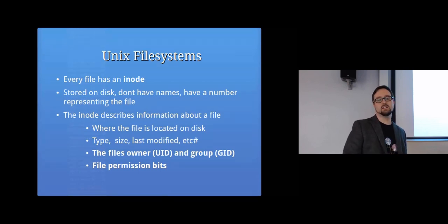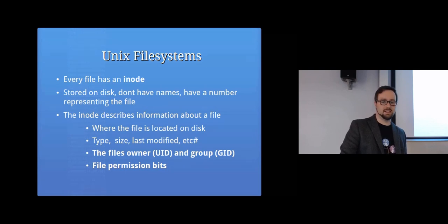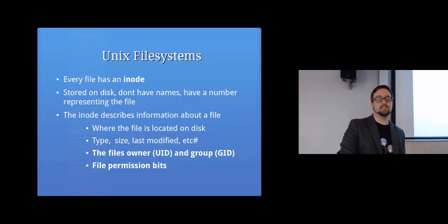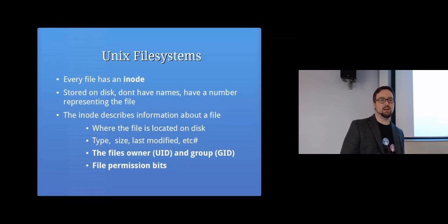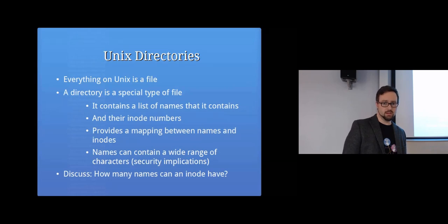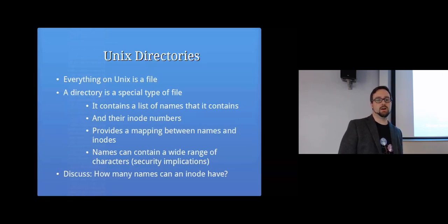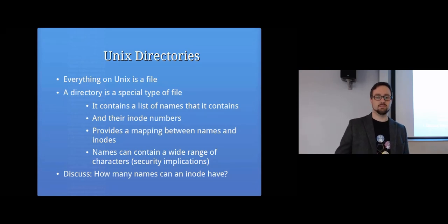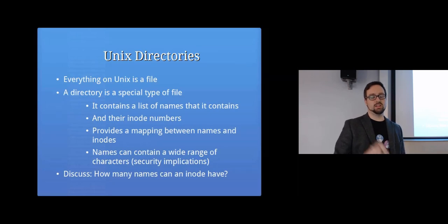Similarly, files are stored with an inode number rather than a name. On a Unix file system on disk, a file doesn't have a name — it just has a number. Under that inode there's a block of information describing metadata: physically where it is on disk, type, size, last modified date, last access date, and crucially the UID, GID, and the file permission bits — a set of bits representing what's allowed on that file.